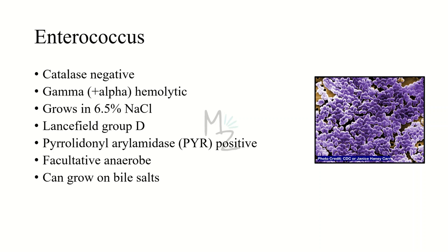Enterococcus is gamma hemolytic. Gamma hemolytic bacteria are responsible for doing no hemolysis on blood agar, though they sometimes do partial hemolysis and may be considered alpha. Enterococcus grows in 6.5% salt solution and belongs to Lancefield group D classification. We'll talk about classification in detail in just a moment.